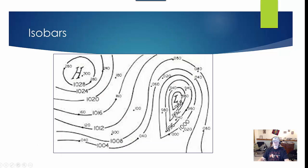Isobars: We did the activity where you colored in the different isobars. Isobars are lines that connect points of equal pressure. Remember, wind always flows from a high pressure to a low pressure.